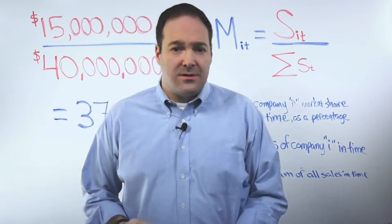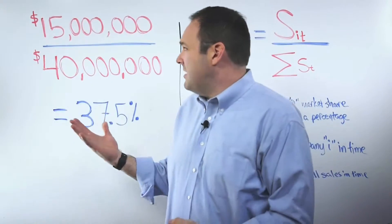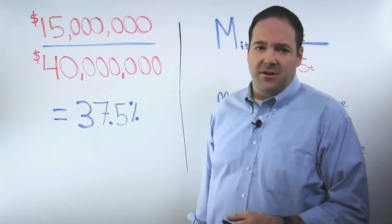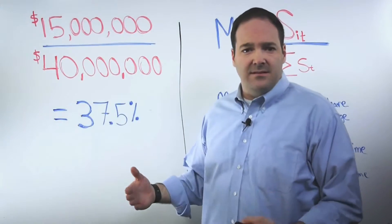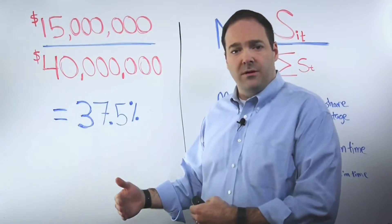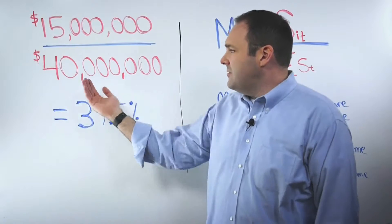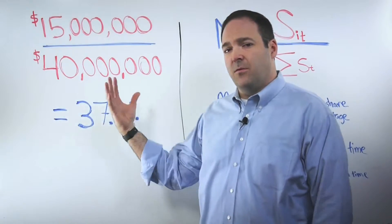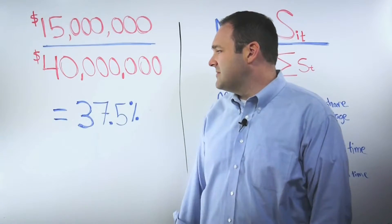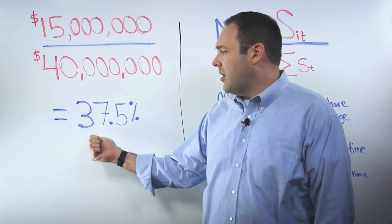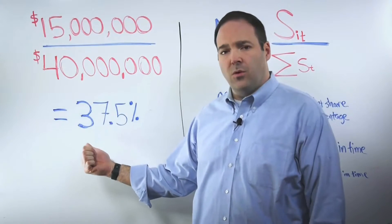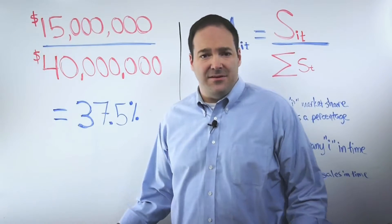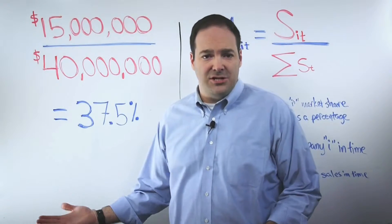To show you what those would look like using some real numbers: if you did 15 million dollars worth of sales in a quarter, and you knew that your category or industry in total did 40 million dollars of sales, your market share for that quarter is 37 and a half percent. And so that's how you calculate market share.